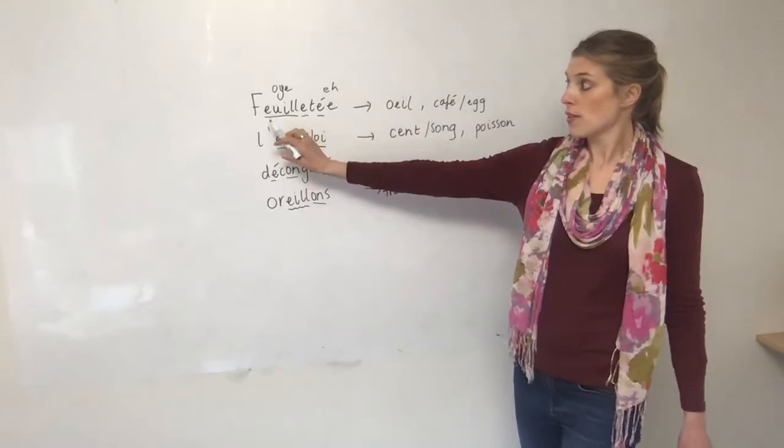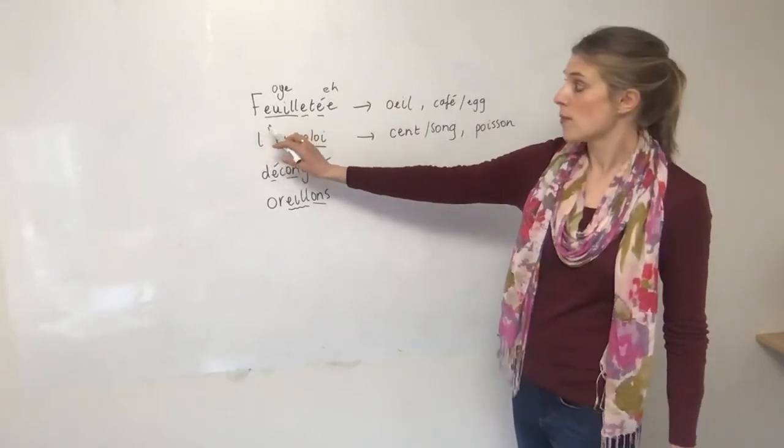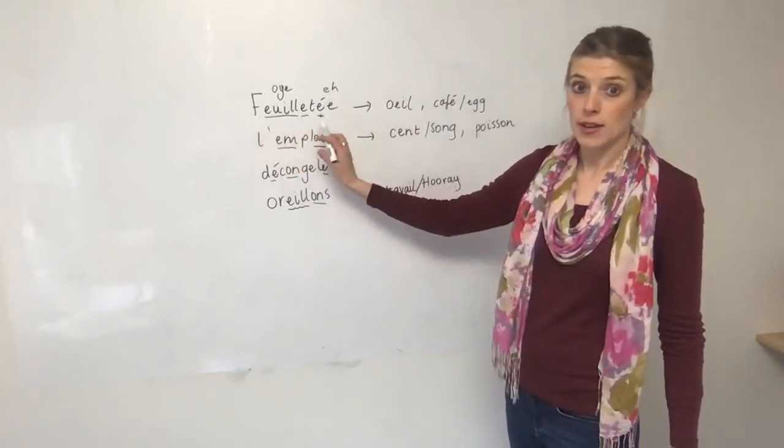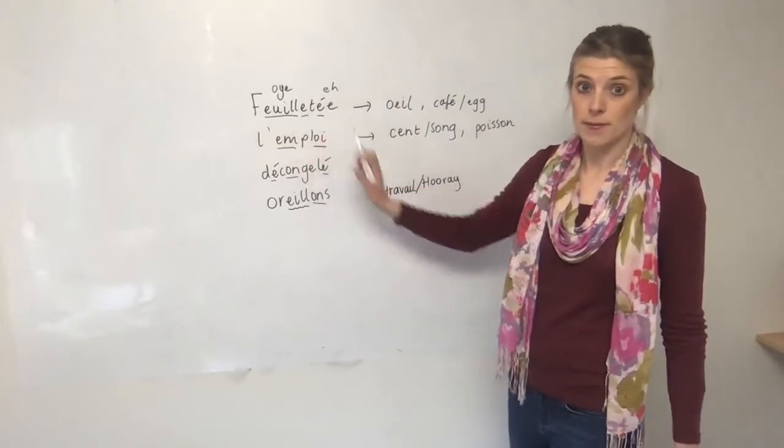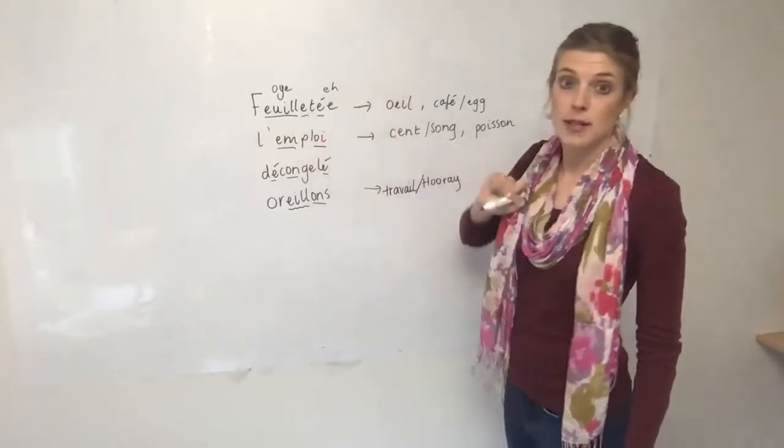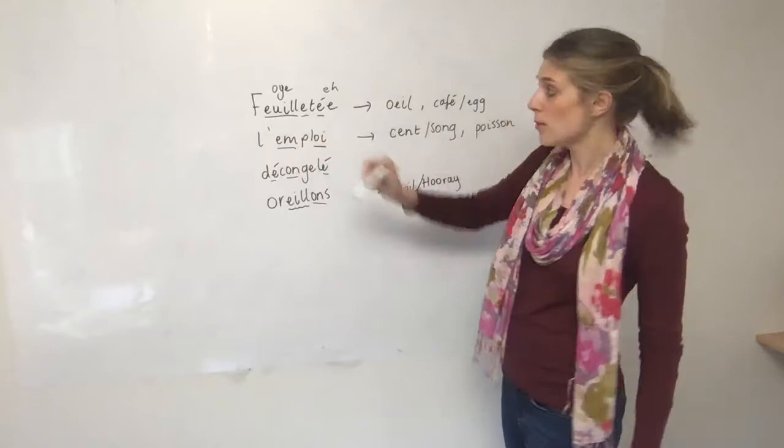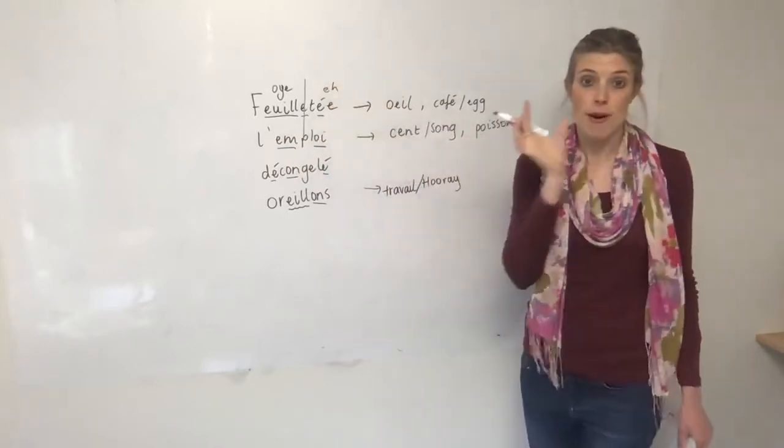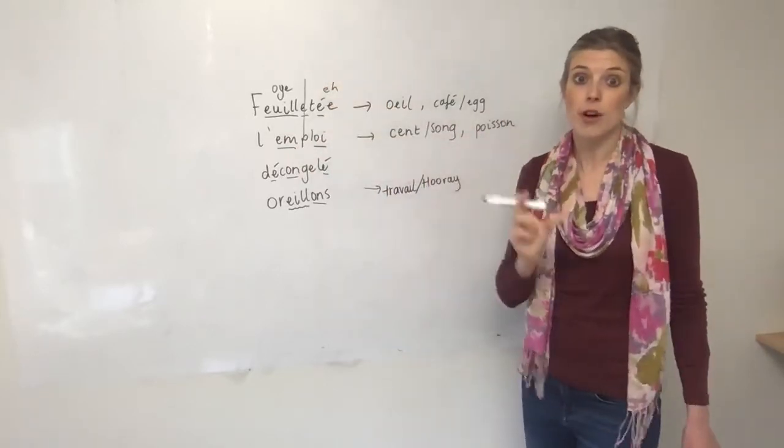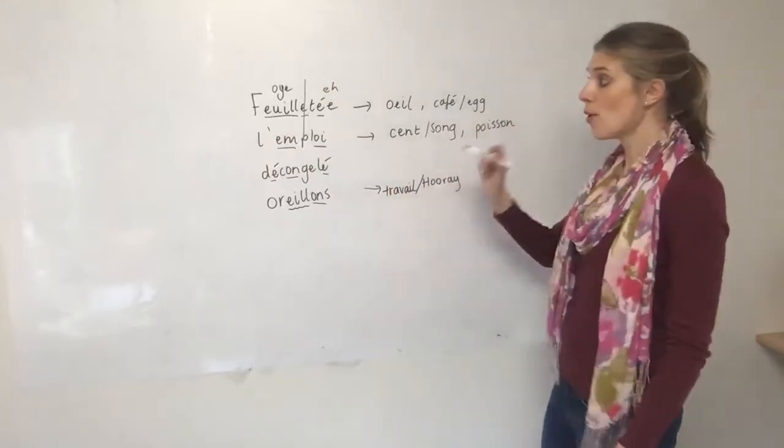So with that OI and that E, the way that we say this word is fauteuillé. When you have an E in the middle or almost in the middle, you don't really say it in French, so put a line through it and break it up as two syllables, fauteuillé.